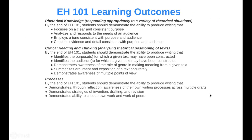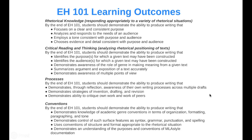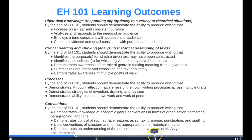I want to make sure that we have a chance to look at the learning outcomes for this course — the kinds of goals that you should be able to fulfill by the end of this course. You can see they're clustered around four major content areas: rhetorical knowledge, critical reading and thinking, processes, and conventions. All of the work that we do in this course is building towards these learning outcomes. Please take a moment — you might want to pause this part of the video if you want to read through these in more detail.